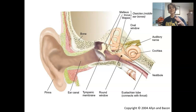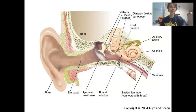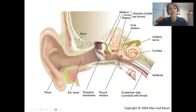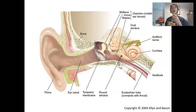As sounds enter the ear canal, they are vibrating — you get those high-pressure and low-pressure areas of air molecules, which cause vibrations. That causes the eardrum to vibrate. Those vibrations are then transmitted from the eardrum to the bones of the middle ear. Once we get to the eardrum, we're pretty much done with the outer ear and moving on to the middle ear.